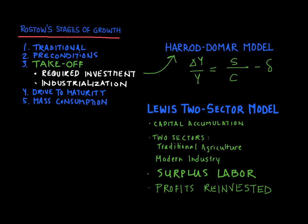What we want to do today is talk about the Lewis Two-Sector model, which tries to explain how industrialization occurs — how does an economy move from being based on agriculture to having a more important role for modern industry? The Lewis Two-Sector model, just like the Rostow stages of growth and Harrod-Domar model, is based on capital accumulation. Instead of having just one sector, the Lewis model is a little bit disaggregated. We have one traditional agricultural sector and one modern industry sector — two industries in this model.